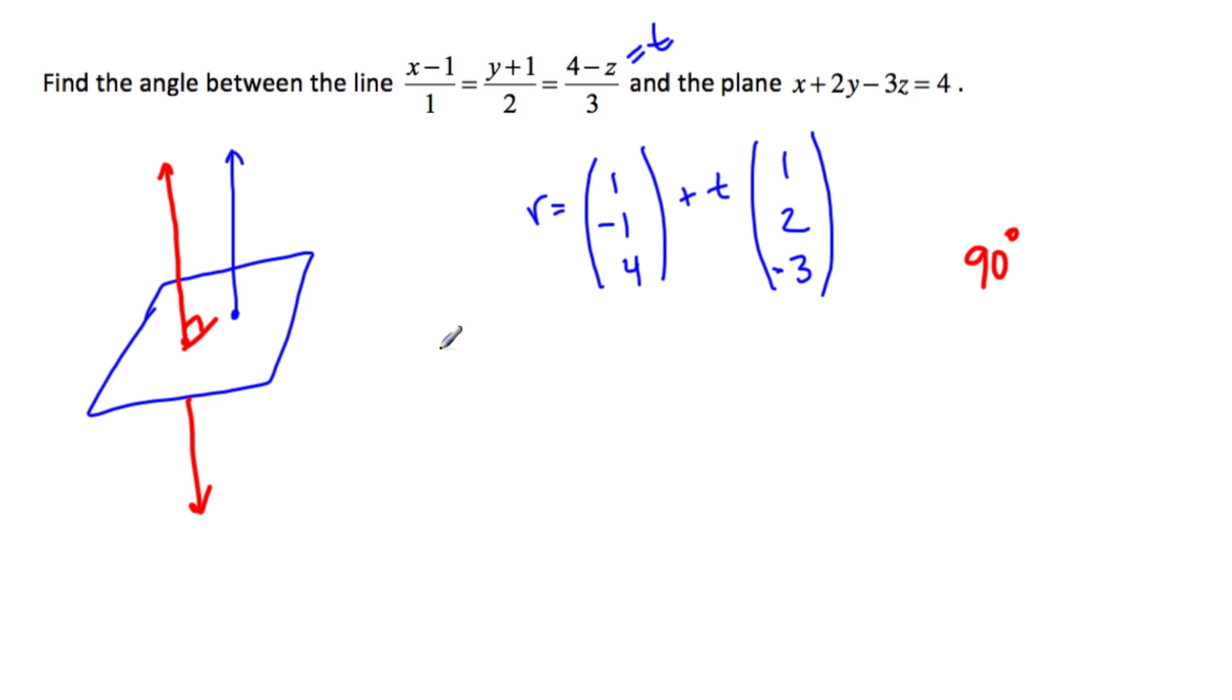So I need 1, 2, minus 3, dot 1, 2, minus 3, divided by the square root of, this is 9, plus 4 is 13, plus 1 is 14. So I have to square them all, right, 9, plus 4, plus 1, same thing, root 14.